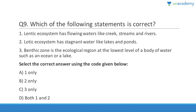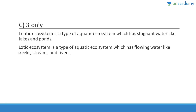Question 9: Lentic ecosystem has flowing waters like creeks, streams, and rivers — this is wrong. Lentic has stagnant water. A useful mnemonic: lotic sounds like 'lot of flowing' — lotic has flowing waters like creeks, streams, and rivers; lentic has stagnant water like lakes and ponds. So options 1 and 2 are both wrong. The answer is C, option 3 only. Benthic zone is the lowest level of a body of water such as an ocean or a lake.